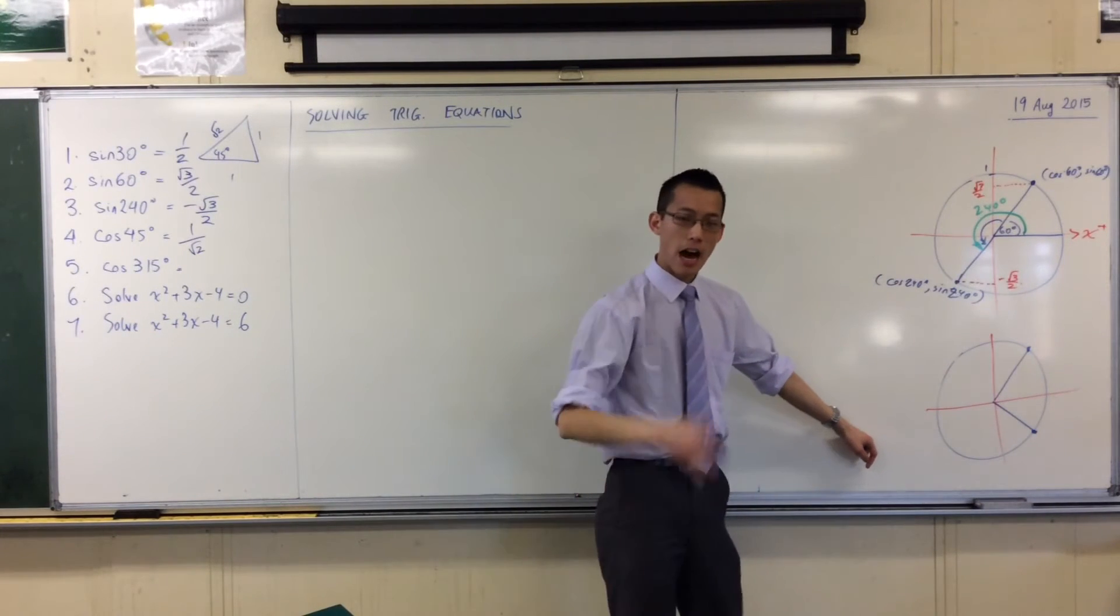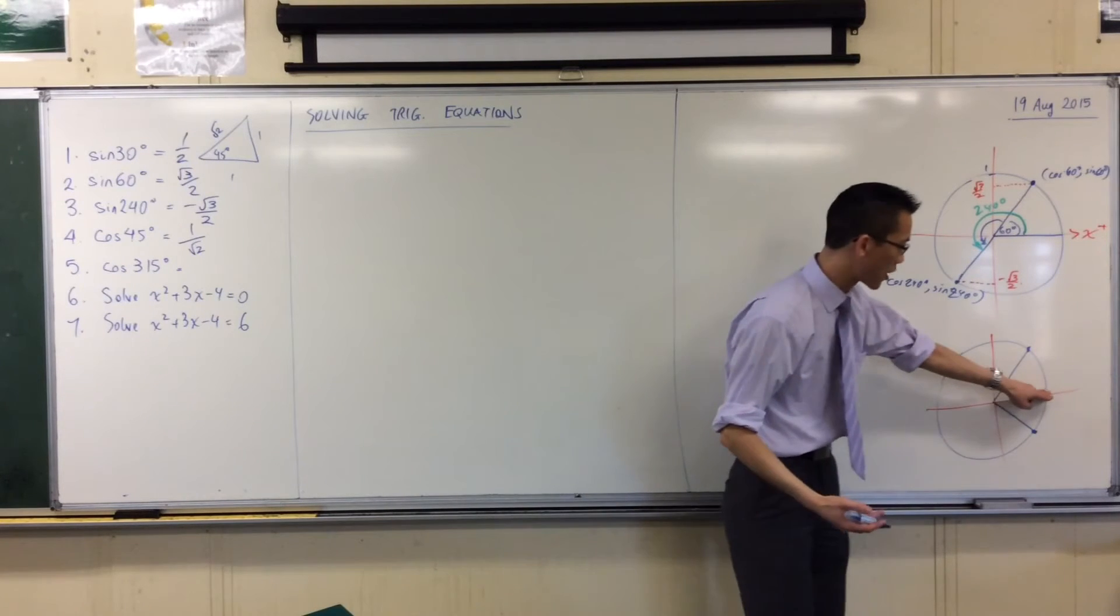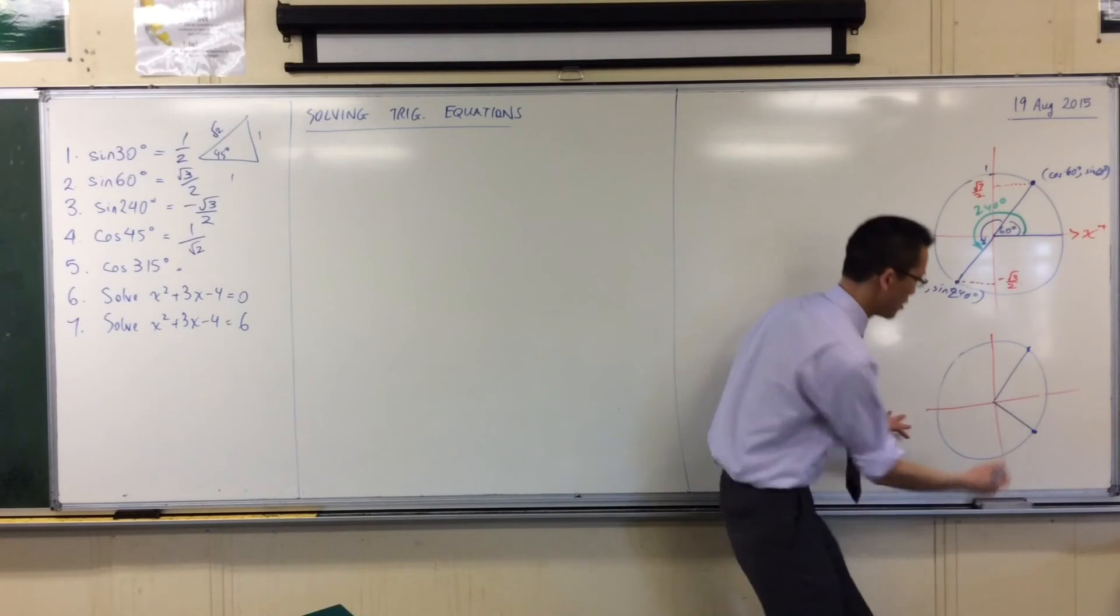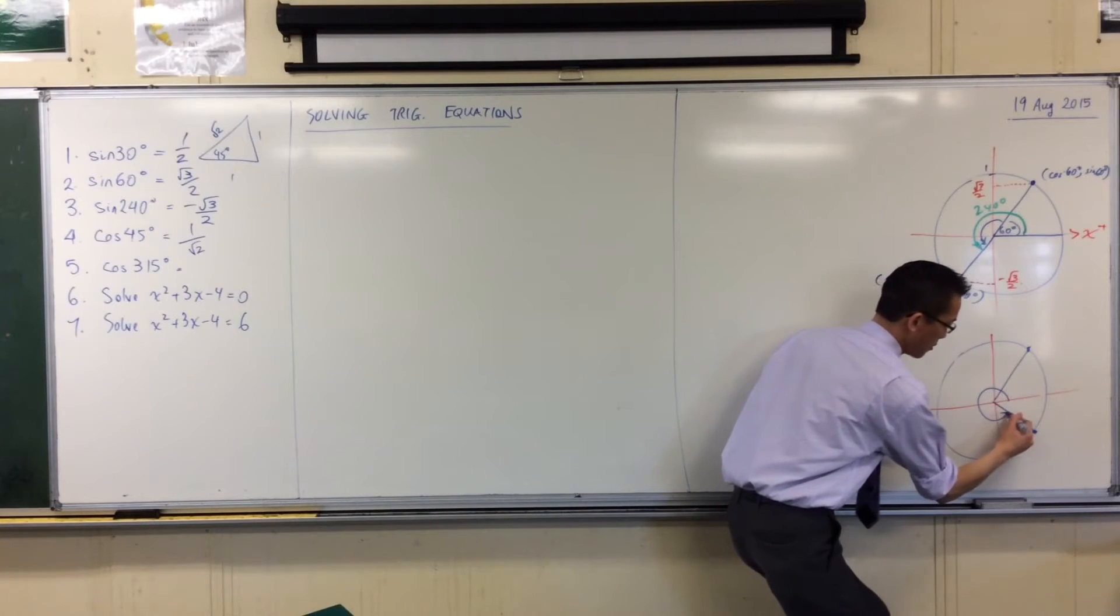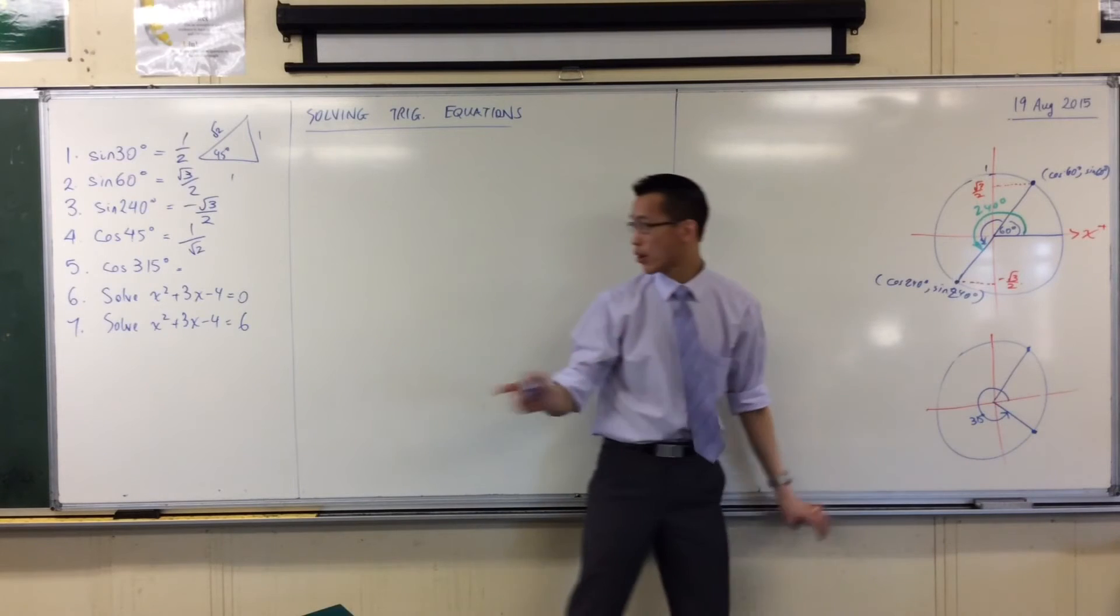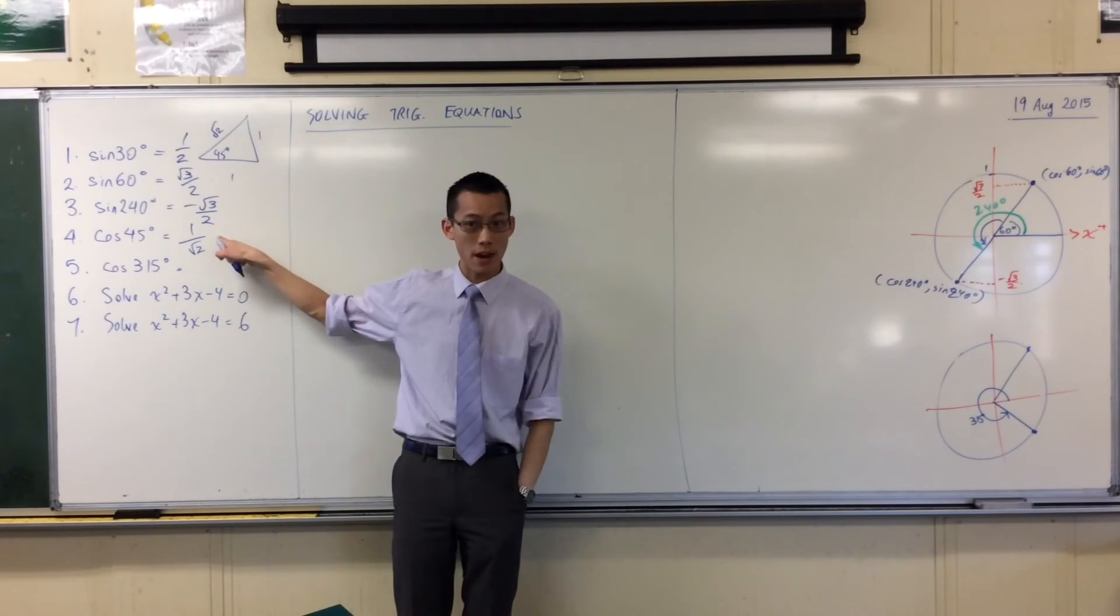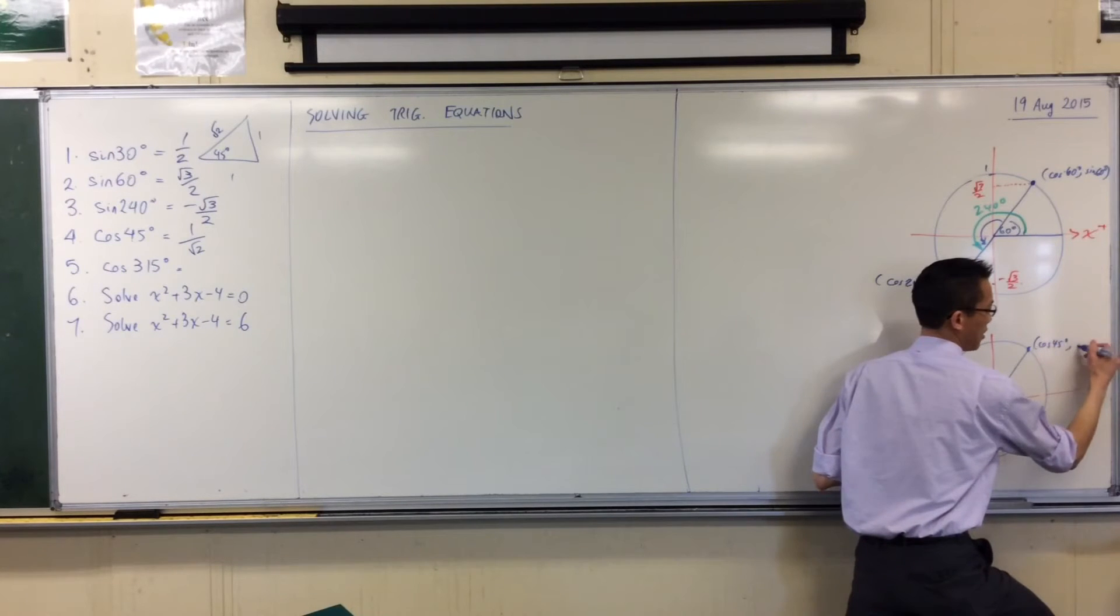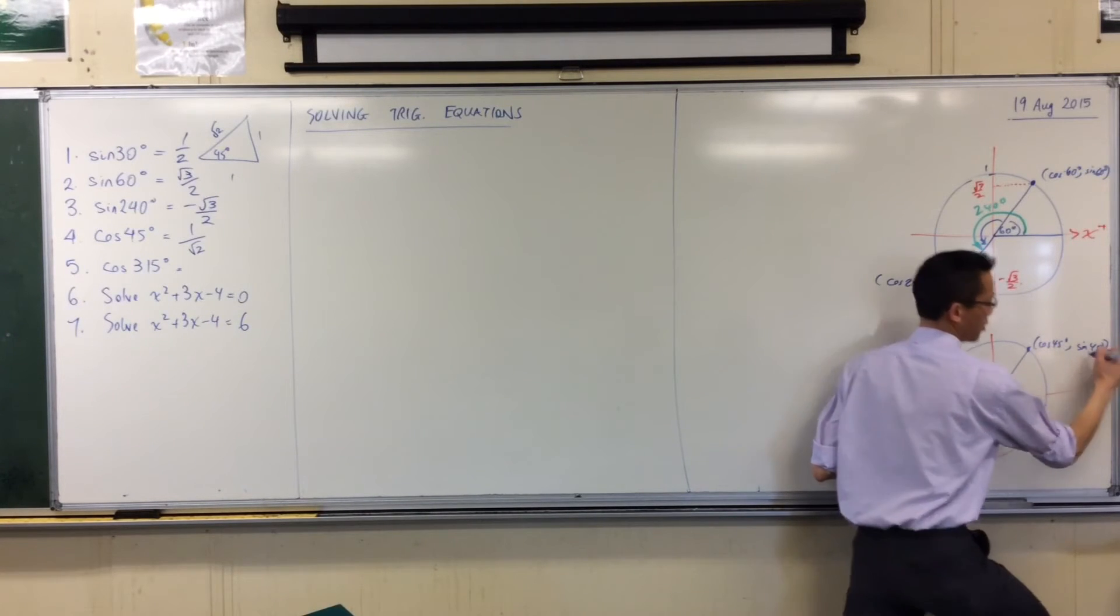315 goes all the way around to here. Do you see that? I'm 45 degrees short of coming back to the start, because coming back to the start is 360. So going all the way around, that's 315. Okay, you already told me what cos 45 is. That's up here. Cos 45, and then the x-coordinate will be, sorry, the y-coordinate will be sine 45.